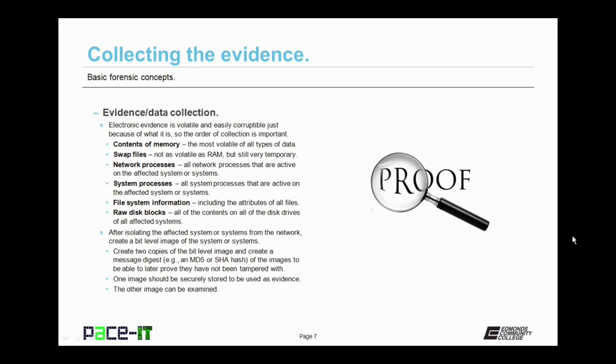After that, move on to file system information, including the attributes of the files. You need to do this before you do anything else, so that you have completely documented the attributes of the files. Once all of that is done, it's time to make a copy of all of the contents on all of the disk drives of the affected systems, and that would be by raw disk blocks.